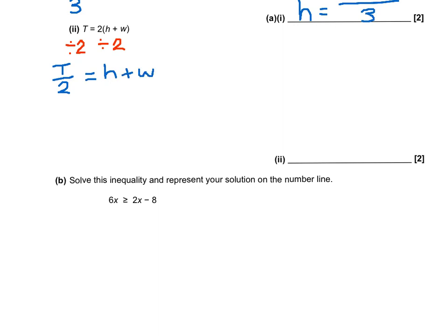Now, the only other thing that's stopping the h from being on its own is the w. So we'll do the opposite to get rid of that. And that now leaves us with T divided by 2, take away w on the left-hand side. And on the right-hand side, that just equals h, which is what we were after. So h equals T divided by 2 minus w.